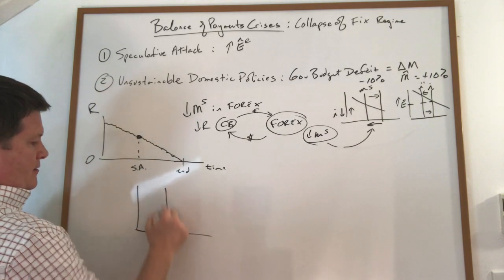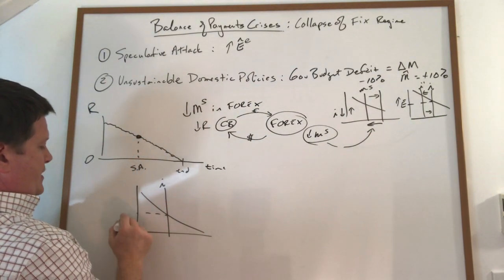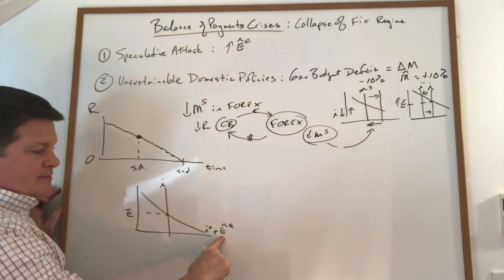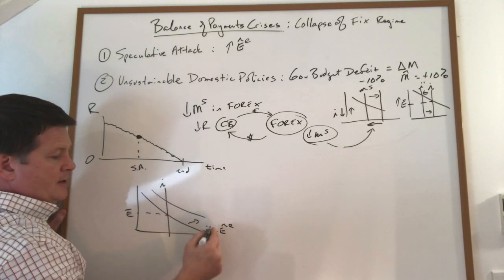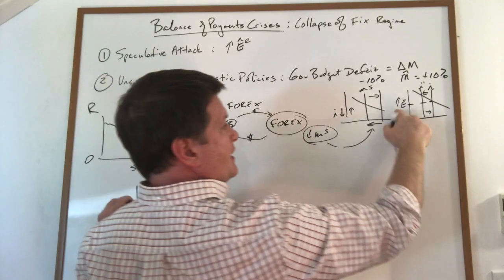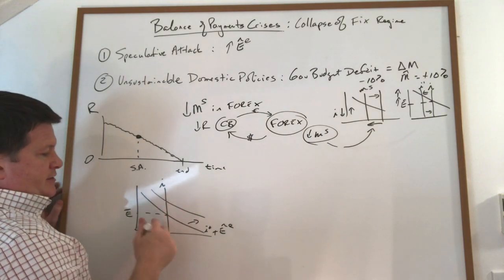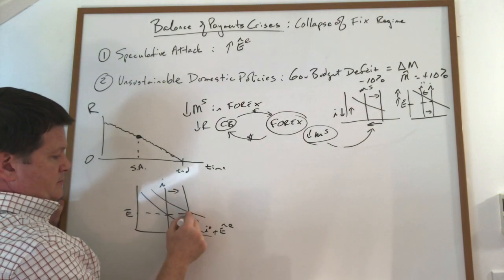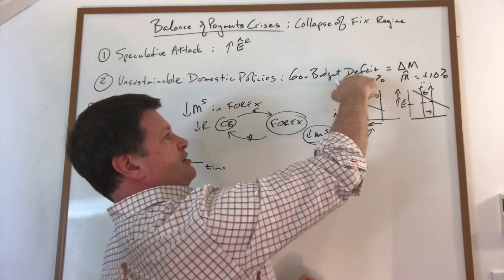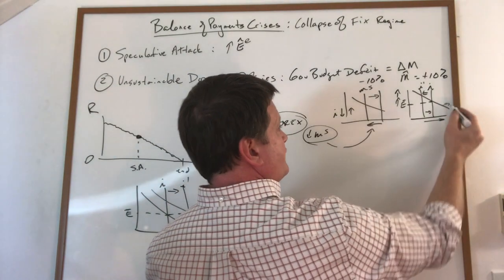At that point, they're still losing reserves. But watch what happens — suddenly, this expectation starts to increase. Why? Because they know when they hit the end, the central bank will continue to do this, and the exchange rate will rise like it wants to do. So they know the exchange rate will eventually rise. That means the central bank has to increase the interest rate, not only to offset the decrease caused by their own government, but now to move it even further to offset this curve that's shifting outward.